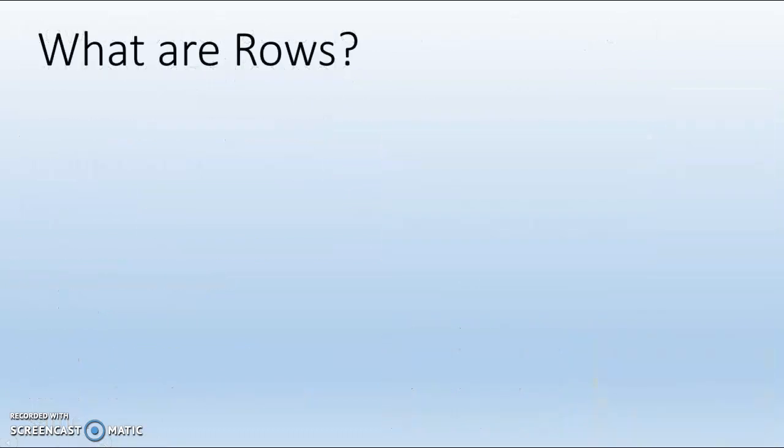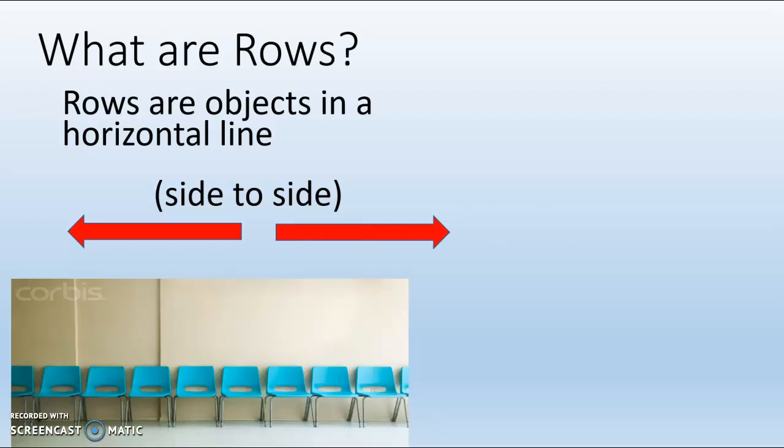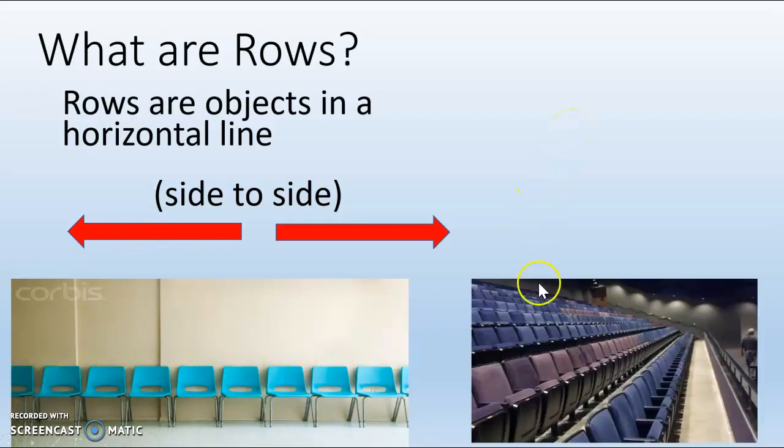So what are rows? Rows are objects that go in a horizontal line. Horizontal means side to side. Here's a row of chairs. As you can see, they go side to side. Here is a row in a theater with many, many chairs, and they all go side to side.